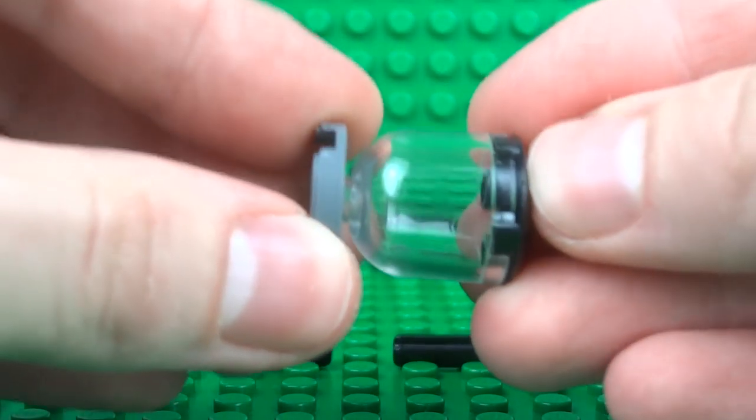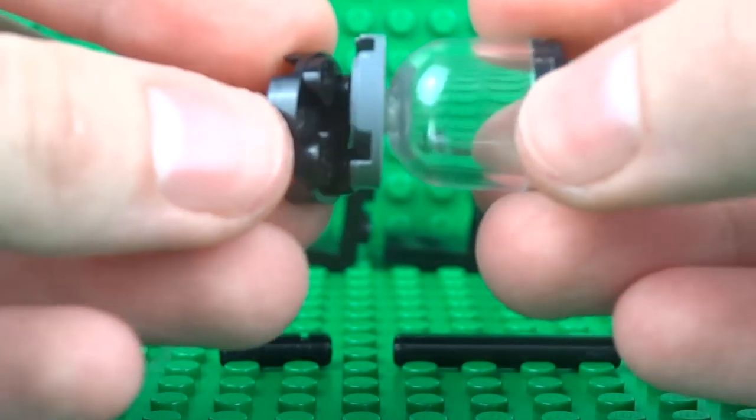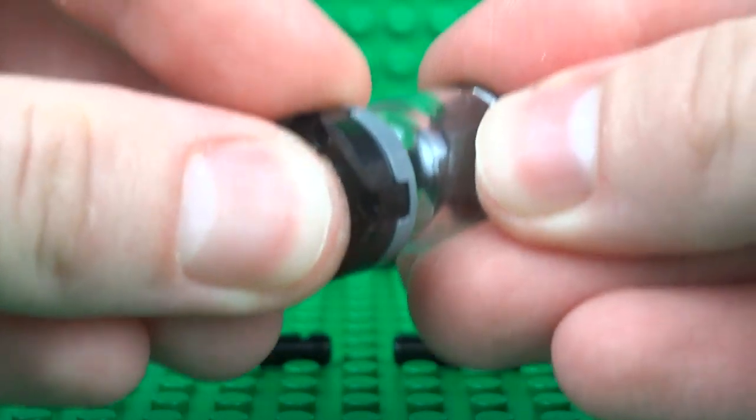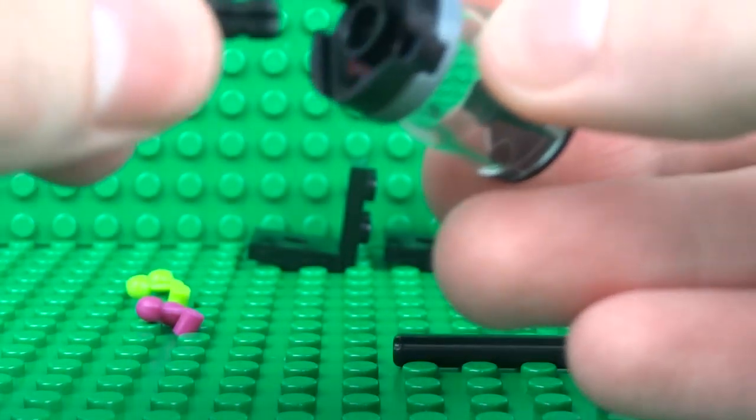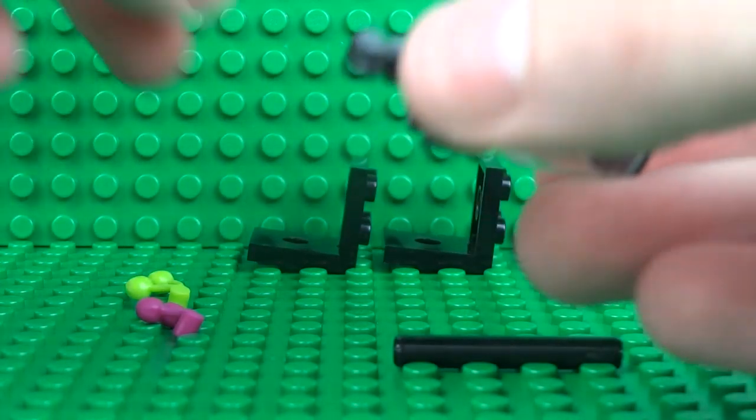And we can attach this to a two by two round plate. So then through the middle of this plate, this is where you can thread a one by two axle just like that.